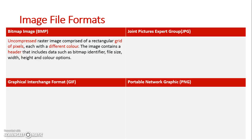A bitmap image is an uncompressed bitmap image. A bitmap image is made up of pixels, and this is basically the pure image without any form of compression on it. It has a wide range of colors, and because it's not compressed, it can be quite a large file size depending on its resolution. It stores a lot of data about the image such as the bitmap identifier, file size, width, and color options — it is the completely uncompressed raster image.